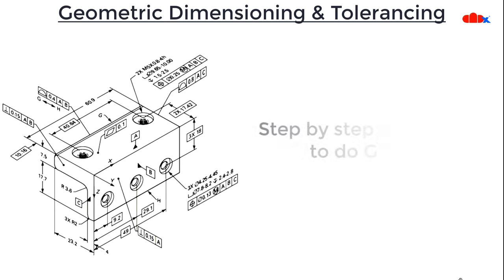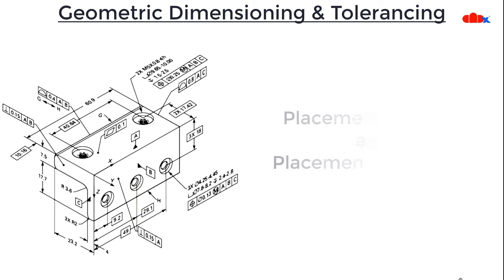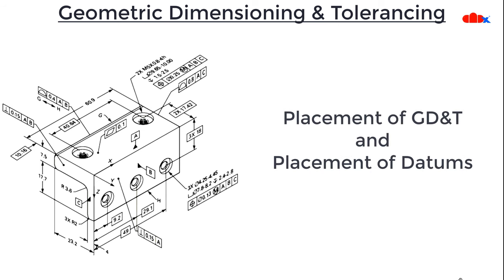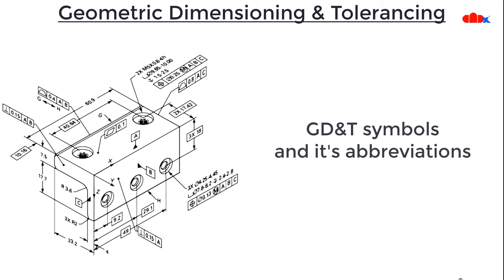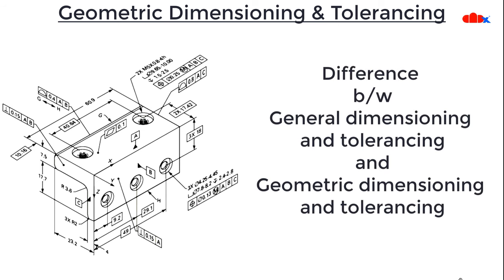In the second part, I will explain the step by step approach to do GD&T — how to start your drawing and how to end it. In the third part, we will understand different types of GD&T placement and datum placement. At last, I will cover GD&T symbols and their abbreviations. So let's start with the need of GD&T and the difference between general dimensioning and tolerancing and geometric dimensioning and tolerancing.